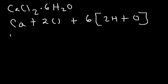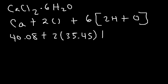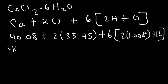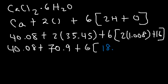Now, the atomic mass for calcium is 40.08. For chlorine, it's 35.45, but let's not forget to multiply it by 2. And for hydrogen, we know it's 1.008, and 16 for oxygen. Now, 2 times 35.45 is 70.9. And let's see, we have 2 times 1.008 plus 16 for oxygen. So for water, the molar mass is 18.016.